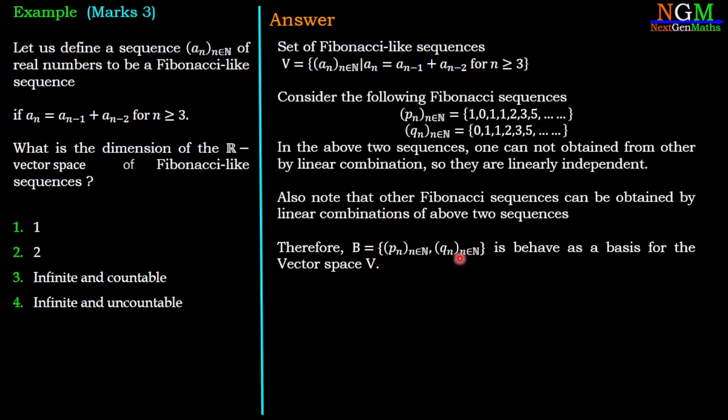Therefore, B contains two elements Pₙ and Qₙ, and B behaves as a basis for the vector space V. Basis B contains two elements, therefore the dimension of V is 2, which is option number 2 and it is the correct answer.